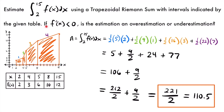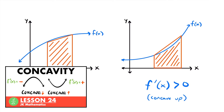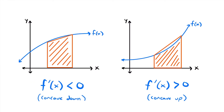Now let's answer the second question: if the first derivative of the function is less than zero, is the estimation an overestimation or an underestimation? Here we have two graphs. The first graph is when the first derivative is less than zero, meaning the function is concave down. The second graph has the first derivative greater than zero, meaning the function is concave up.